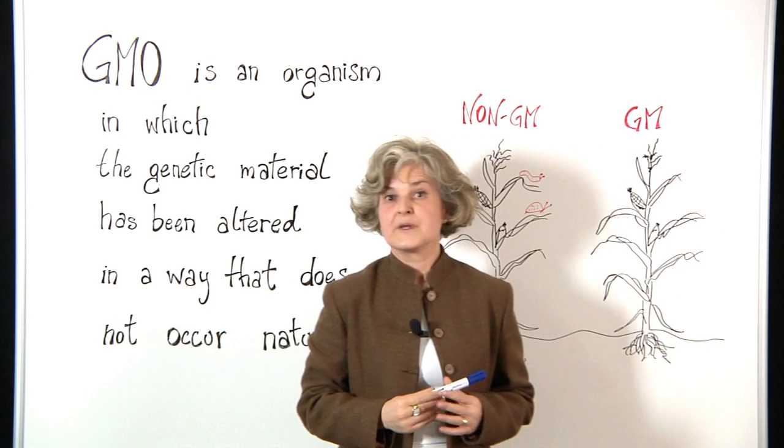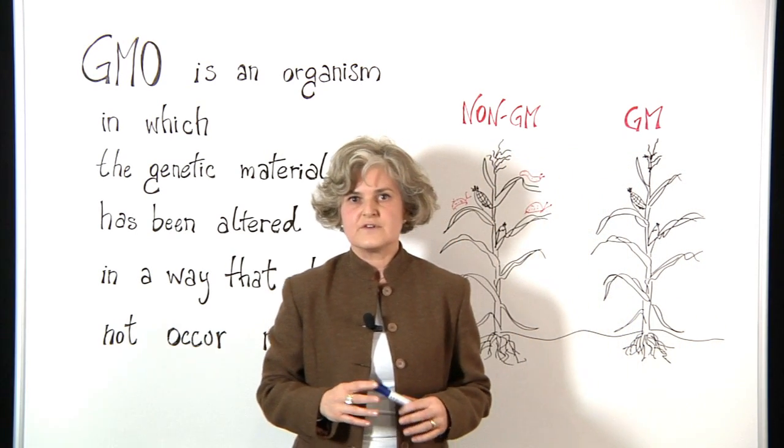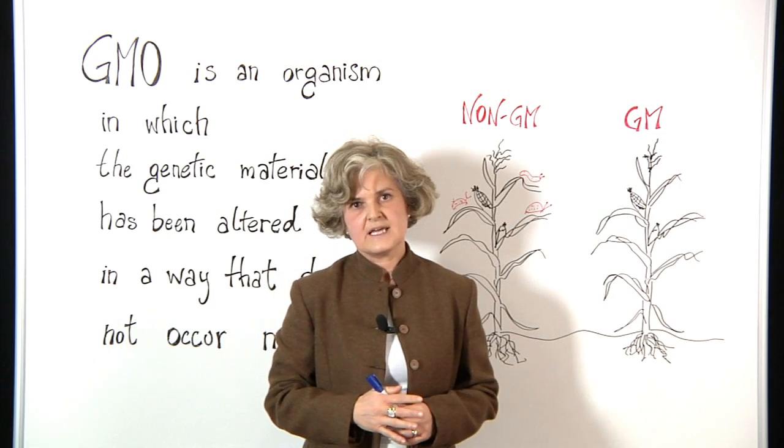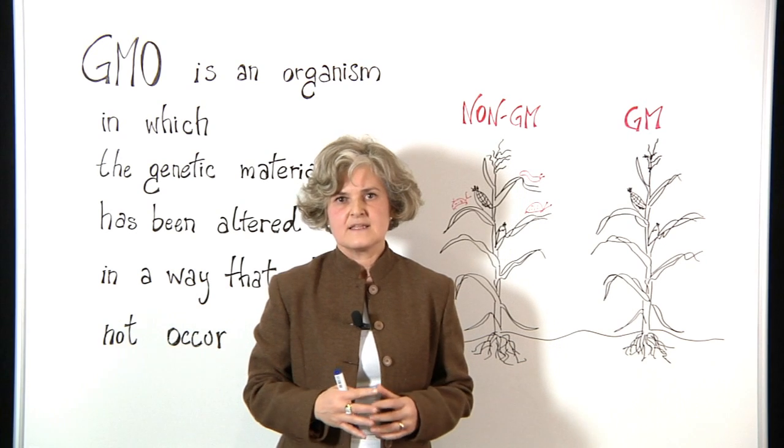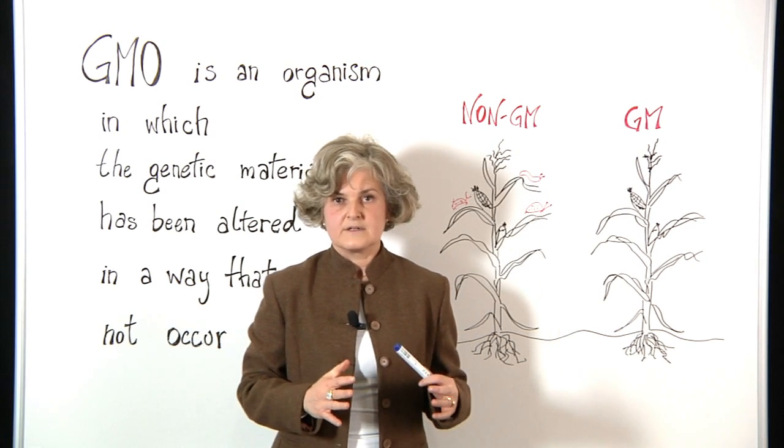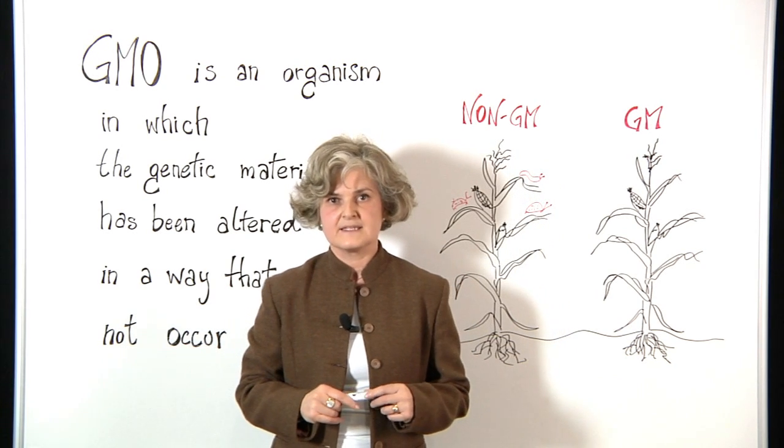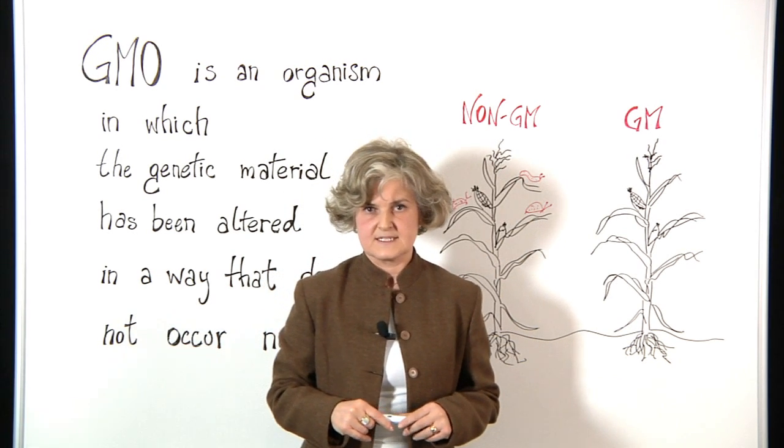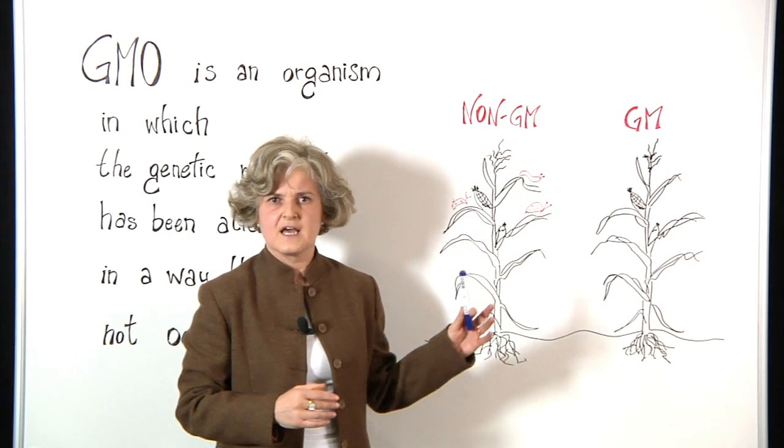Scientists are developing many different types of GM plants to achieve different objectives. For example, they have developed plants which are called drought resistant, meaning that they can survive well also when water availability is quite limited. Other types of plants are called insect resistance and this is the example we will be using today to explain a few things.